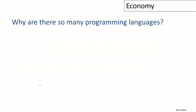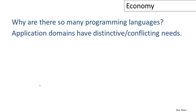So let's begin with the question of why there are so many programming languages and at least a partial answer to this question is not too hard to come by. If you think for a few minutes, you'd realize that the application domains for programming have very distinctive and conflicting needs. That is, it's very hard to design one language that would actually do everything in every situation for all programmers.